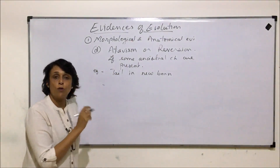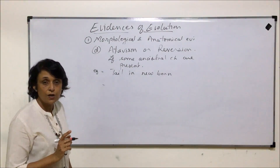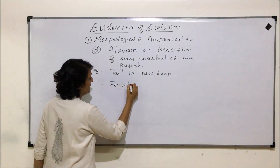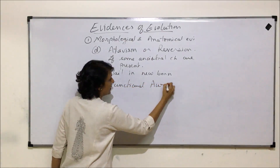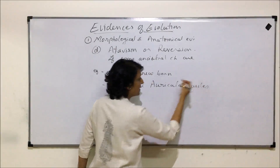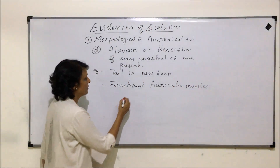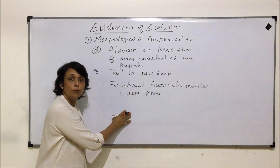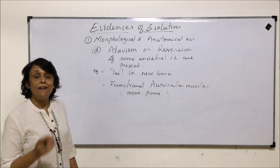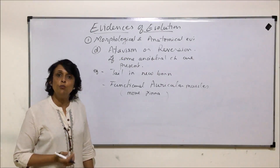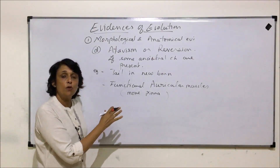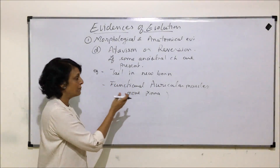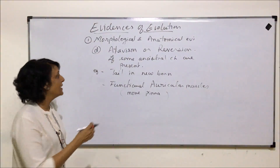Another example involves auricular muscles. In human beings these are vestigial, but if they become functional in an individual — meaning that person can actually move their pinna — that is atavism. Auricular muscles were present and functional in our ancestors, allowing them to move their ears toward the direction of sound. As we no longer use them, they gradually became non-functional. An individual who has these functional muscles is showing an ancestral trait — that is reversion.